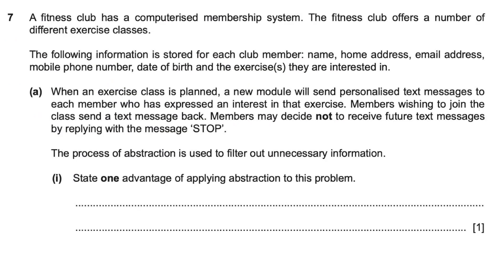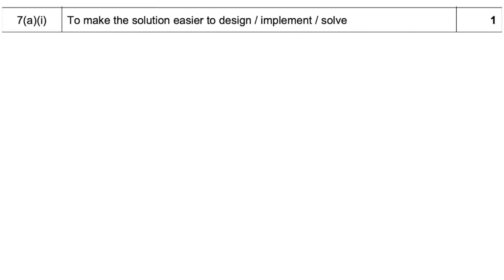We have our last example. The fitness club has a computerized membership system and offers a number of different exercise classes. When an exercise class is planned, a new module will send personalized text messages to each member who has expressed an interest in that exercise. Members wishing to join the class send a text message back, and members may decide not to receive future text messages by replying with 'stop'. The first question: state one advantage of applying abstraction to this problem. By removing any information that's not necessary to solving the problem, planning and solving the problem becomes simpler, perhaps more efficient — it makes a solution that would be easier to design, implement, or solve.